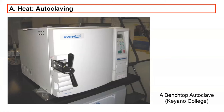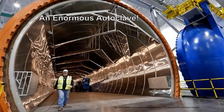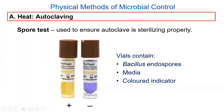We use autoclaves in the lab here all the time. Ours is a little smaller - we have about three of them. We put petri dishes we want to sterilize after using in there, usually in a little bin or bag to contain the liquid. There's also an enormous autoclave at some aerospace company - they make satellites and all the gaskets get sealed in place by putting them in these giant autoclaves. You also see them at the dentist's office where they're putting instruments in to sterilize. Autoclaves are very important and found in hospitals and labs all over the place.